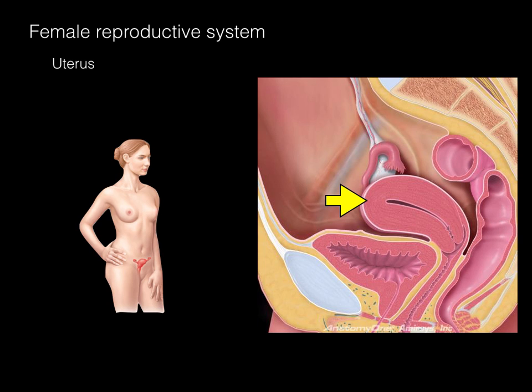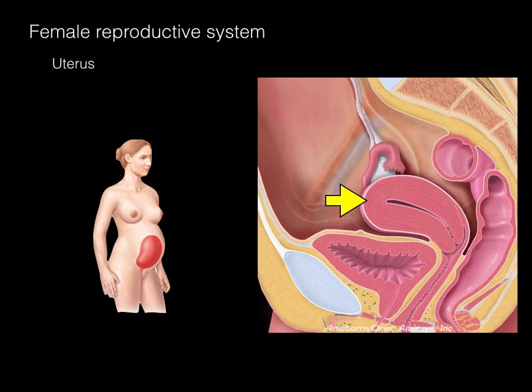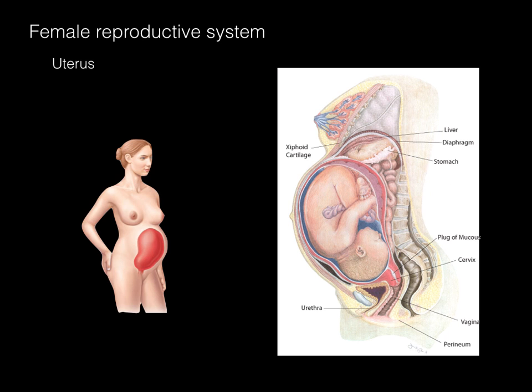Looking at the uterus superimposed on a female, we see the fundus of the uterus. During pregnancy, the developing fetus within the uterus pushes right up against the diaphragm above, the intestines behind, and the bladder below. All the abdominal pelvic contents need to move around to make way for this developing fetus.